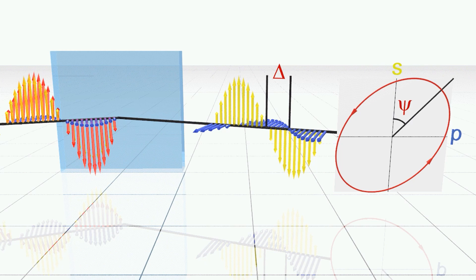Delta is the relative phase difference between the p- and s-polarizations, and psi is an angle determined by the relative amplitude of the p- and s-waves. In ellipsometry, the optical constants n and k of a sample are determined from these two values, delta and psi.